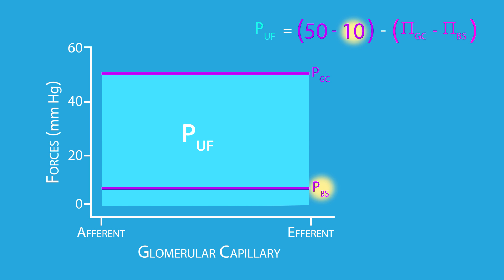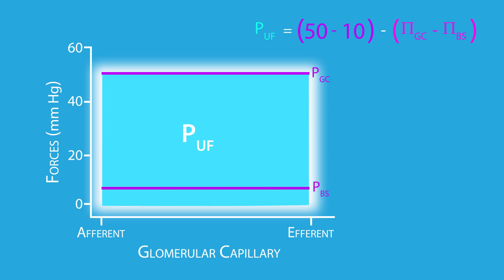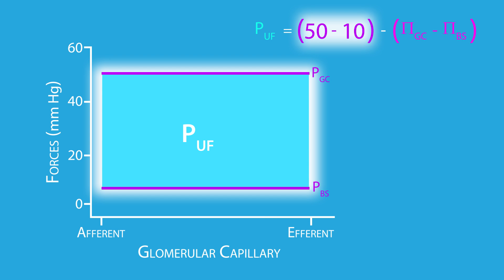As mentioned earlier, the hydrostatic pressure within the Bowman space opposes the glomerular capillary hydrostatic pressure. Because of this, we subtract these two pressures, which yields a net hydrostatic pressure of 40 millimeters of mercury.